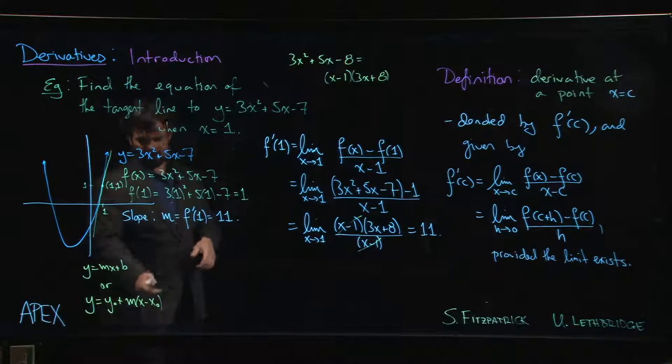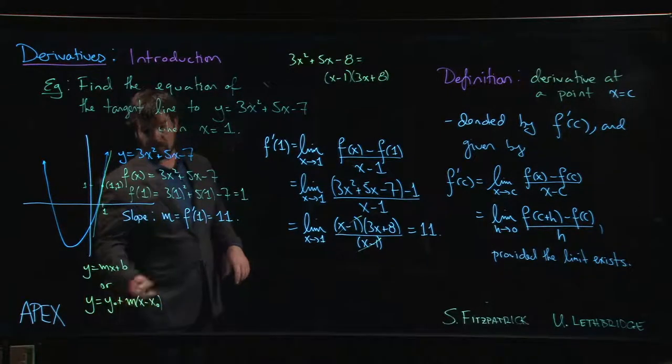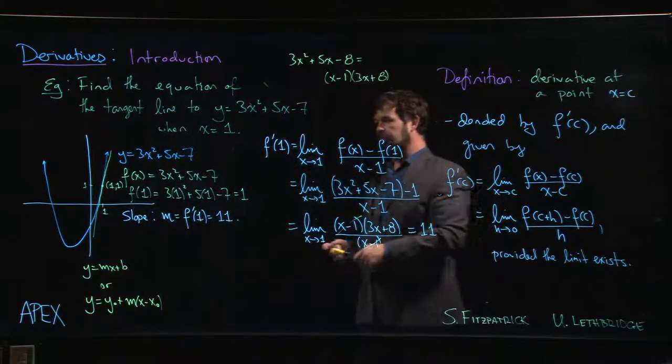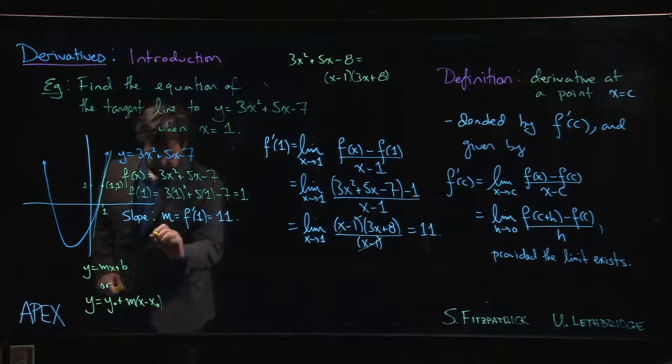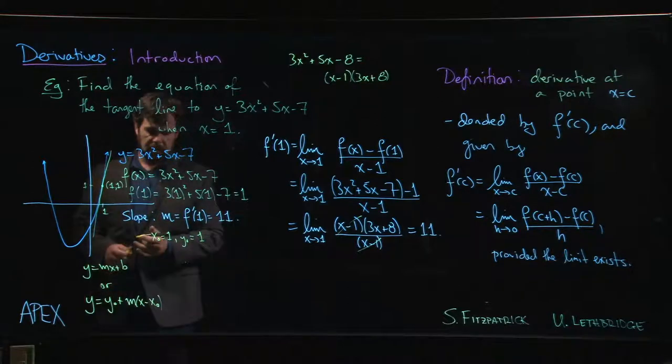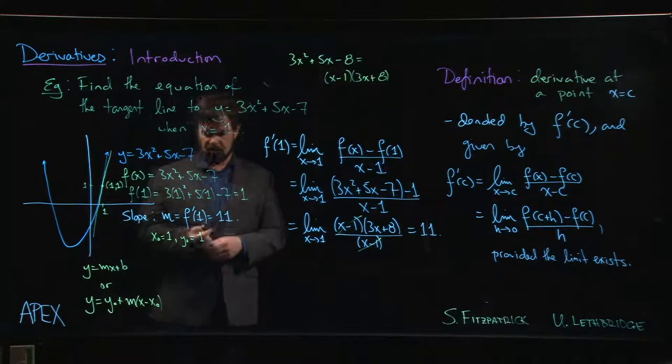So the other option is we do point slope. So here x naught, y naught, we read this as x sub 0, y sub 0. Those are the coordinates of some particular point on the line. In this case, we have x naught equals 1, y naught equals 1. Coordinates of the point that we're given, the point at which we're finding the equation of the tangent line.